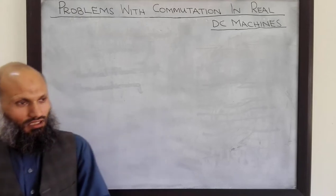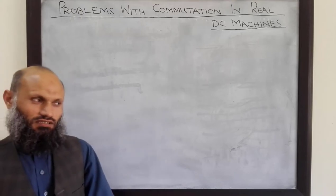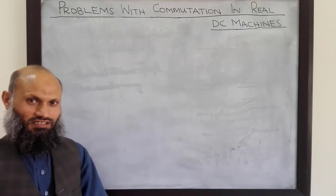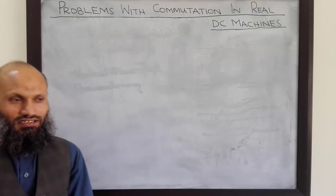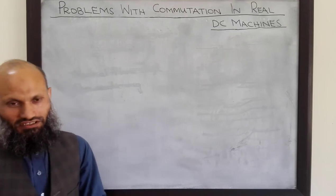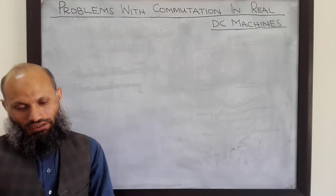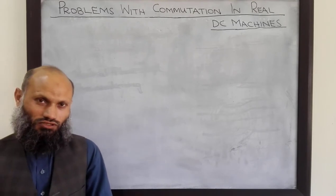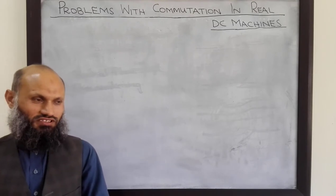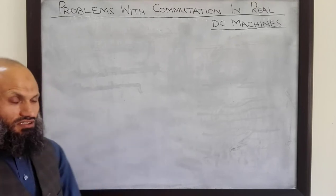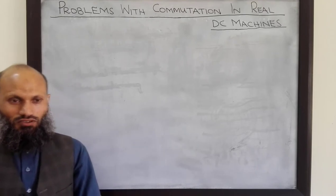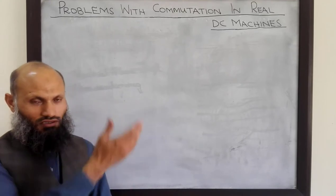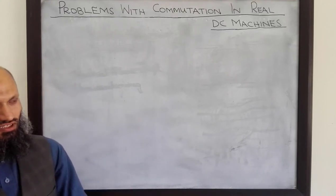Assalamu alaikum. We know that the voltage induced in the coils placed on the rotor of a DC machine is not a unidirectional voltage. The process to convert that voltage signal into a unidirectional voltage signal is called commutation. We have talked about the process of commutation for a simple loop rotating in a magnetic field.